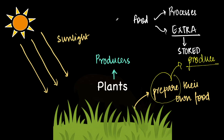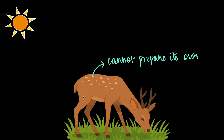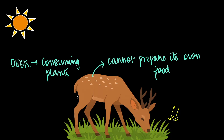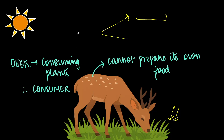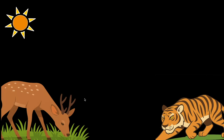Plants produce food they utilize for survival, and whatever is extra gets stored inside their body. But can we say the same about a deer? No — a deer cannot prepare its own food; it is dependent on plants. So deers consume plants, which is why we call them consumers. Organisms that produce their own food are called producers, while those which consume other organisms are called consumers. Tigers, for example, don't make their own food — they feed on animals like rabbits or deer — so tigers are also examples of consumers.